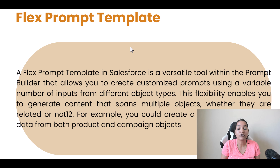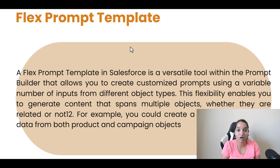This flexibility enables you to generate content that spans multiple objects whether they are related or not. For example, you could create a newsletter that pulls data from both product and campaign objects — up to five objects in this flex template.